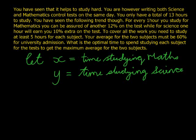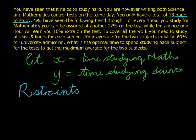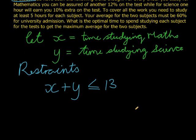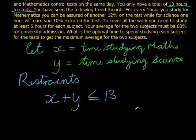We're going to start with our restraints. What is restraining us? Well, let's read again. You have help to study hard, you are writing maths and science on the same day, you have a total of 13 hours to study. Now what that means is that the time I spent studying maths plus the time I spent studying science must be less or equal to 13. Don't worry yet if you don't know how I get it. This is just a quick example to demonstrate how it works. But the time I spent doing both of those must be less or equal to 13 seconds.